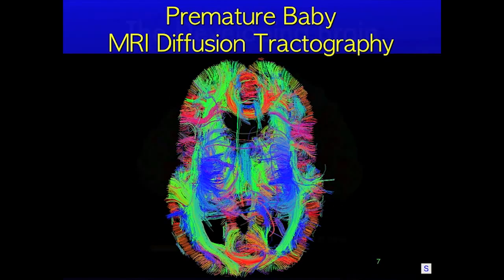We can also use a special MRI technique called diffusion tractography to see how the brains are wired or connected together. Here I'm showing a brain of a premature baby born 10 weeks early, looking from the top down with the face at the top of the frame. Blue fibers are connections running up and down and help the brain control its body. Red fibers run right and left and support communication between hemispheres. Green fibers are connections running front to back and back to front and support our cognitive functions.